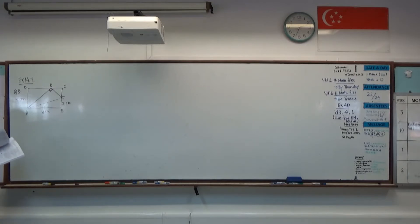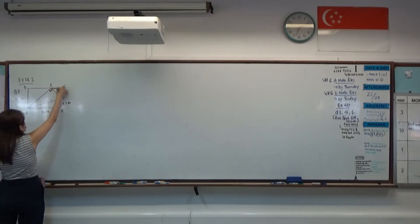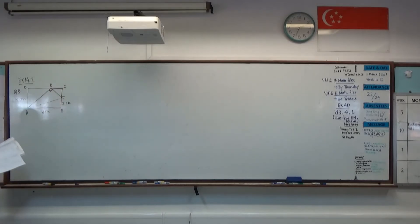So in part 1, we want to express EC, this length here, and AE, which is this length, in terms of X.